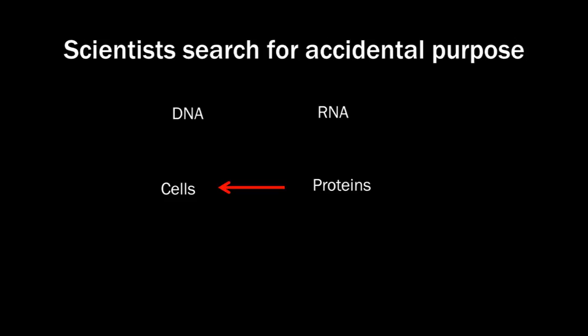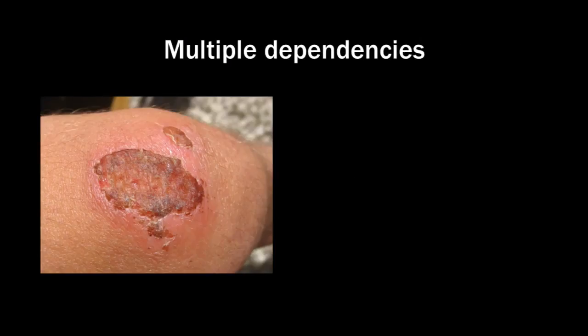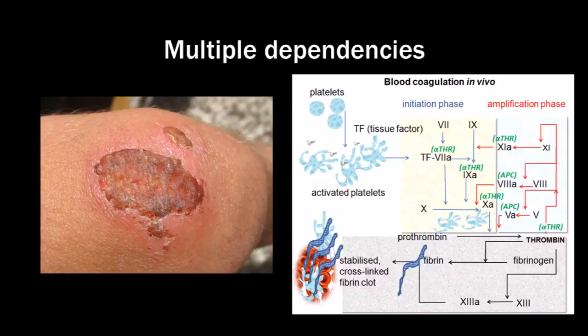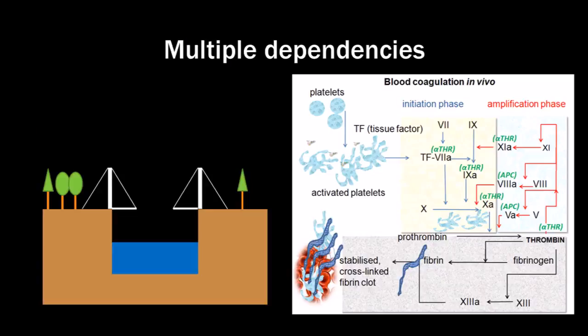We also have examples in nature of multiple dependencies. Blood clotting looks simple, but it is dependent on many different elements in our blood. If one is missing, it won't work. This is similar to the example of the bridge. So in this case, tuning won't do. Blood clotting is an invention. In this case, nature could not have seen any improvement until the invention was complete. Natural selection is insufficient to explain it.